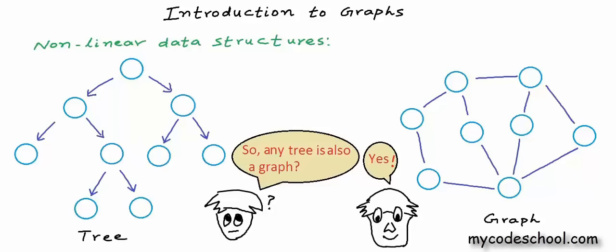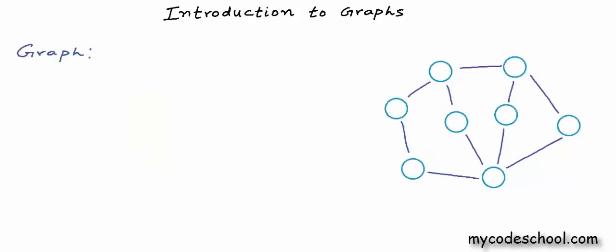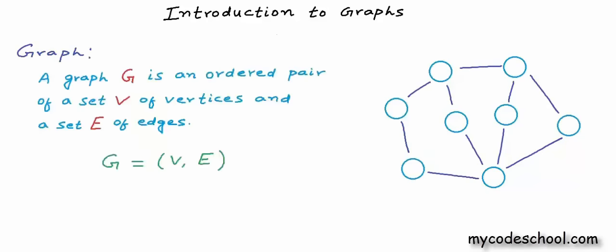Graph as a concept has been studied extensively in mathematics. If you have taken a course on discrete mathematics, then you must be knowing about graphs already. In computer science, we basically study and implement the same concept of graph from mathematics. The study of graphs is often referred to as graph theory. In pure mathematical terms, we can define graph something like this.